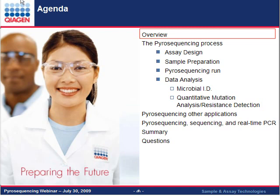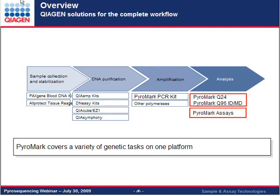I'm going to start off with an overview of what pyrosequencing is. Pyrosequencing is a rapid and cost-effective solution for quantitative short-read sequence analysis. Here is the workflow for Kyogen. With the acquisition of the Pyromark systems, Kyogen has always been an industry leader for DNA purification and amplification, and now we can bring you the entire solution all the way from sample collection down to analysis.